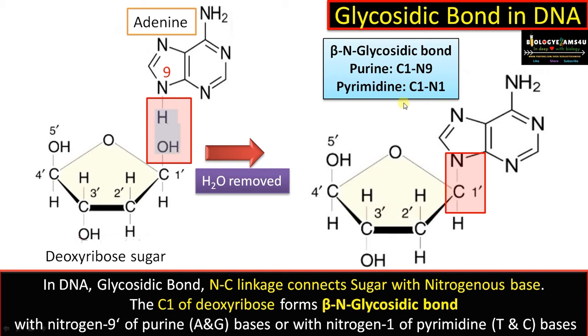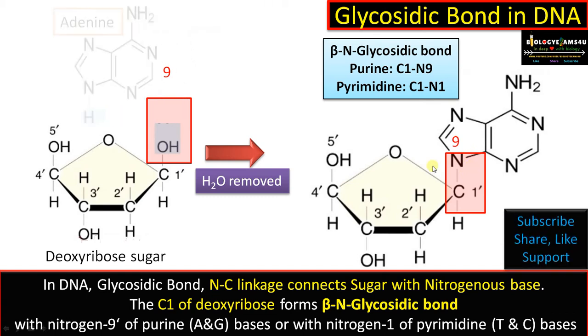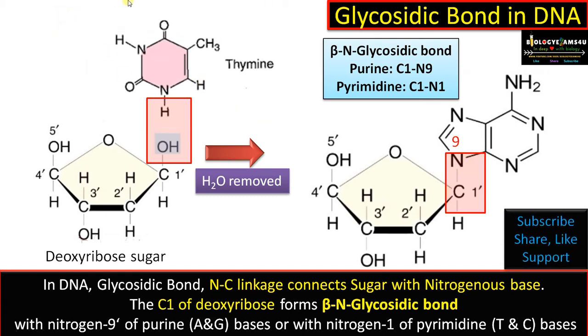In the case of purine, the bonding is between C1 and N9. Now let us look into what happens with pyrimidine. This is a pyrimidine — this is thymine.